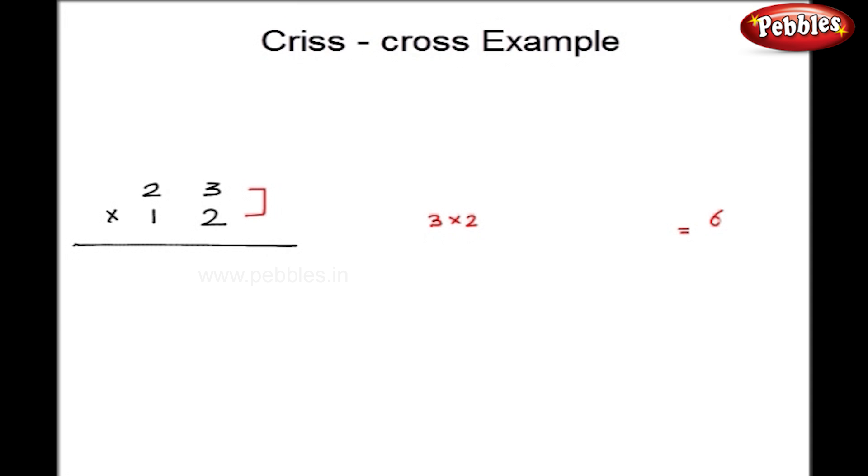Let us write this answer here. Now, I will cross multiply and add two columns as 1 into 3 plus 2 into 2. So I get 3 plus 4, that is 7.